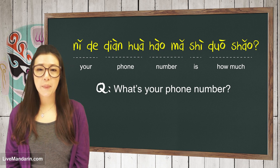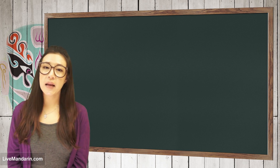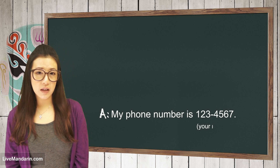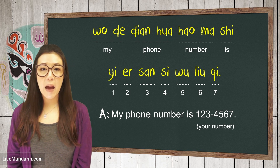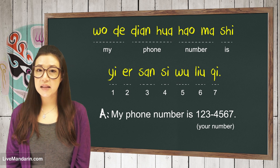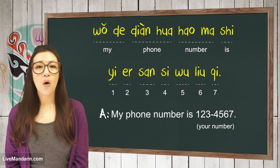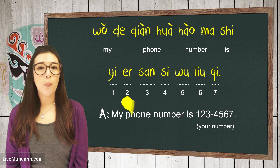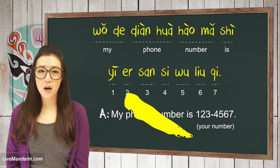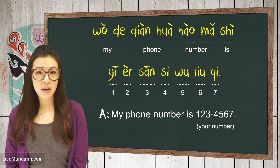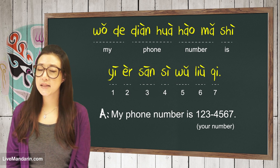People would reply by saying 'My phone number is 1234567.' In Mandarin it is 我的电话号码是一二三四五六七.